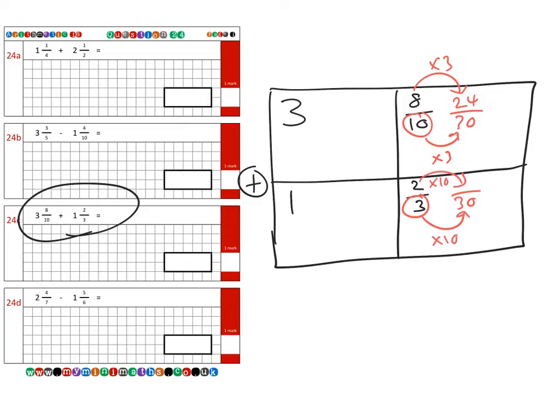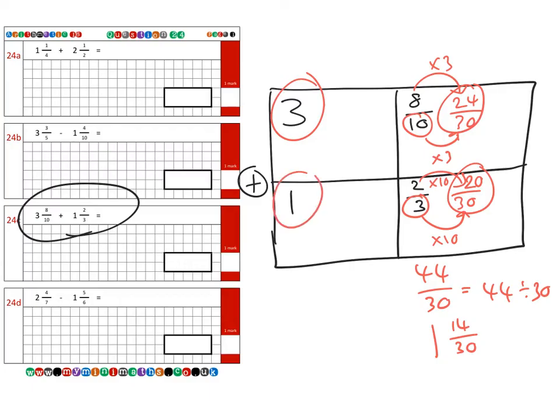I've times this by three so we do the same with the top as well, so that's 24 thirtieths. Here we've multiplied this by 10, we'll do the same with the top so that becomes 20. So 24 thirtieths add 20 thirtieths is 44 thirtieths. 44 divided by 30, so we can fit one lot of 30 into 44 and there's 14 out of 30 left over, plus we add the three units and the one unit and extra four units for a final answer of 5 and 14 over 30.